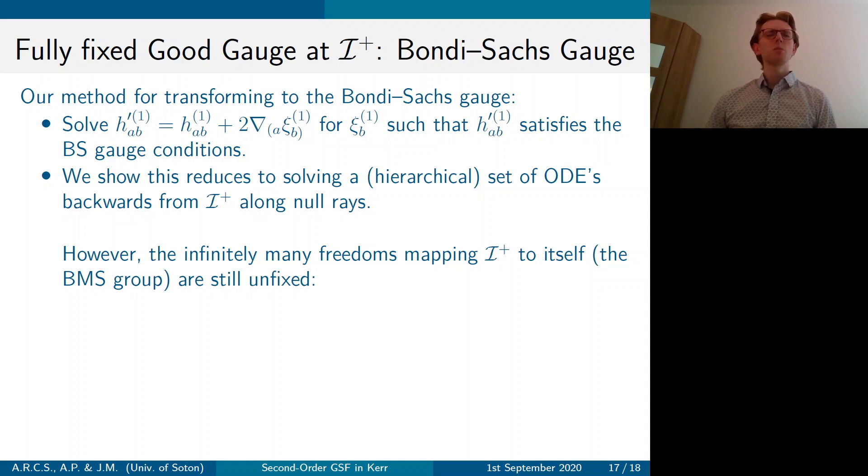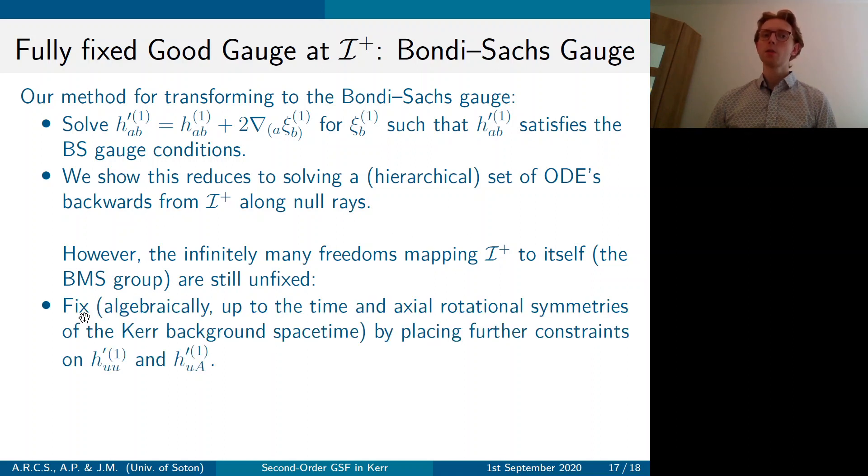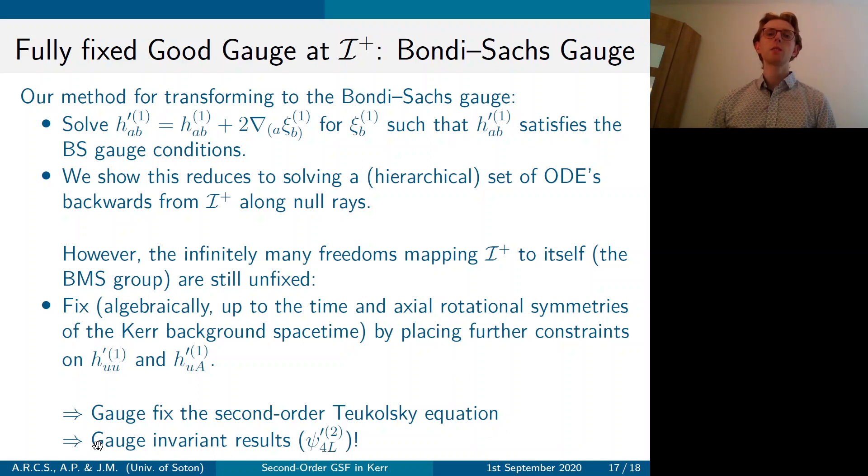However, once you're in the Bondi-Sachs gauge, there is some residual gauge freedom. This is known as the BMS group. So we have also found a method for algebraically solving a gauge vector such that you can fix the BMS frame of the spacetime. And you do this by placing further constraints on the metric perturbation. So implementing these two methods, you can gauge fix our second order Teukolsky equation such that it solves for a gauge invariant result, psi 4 L2 prime.